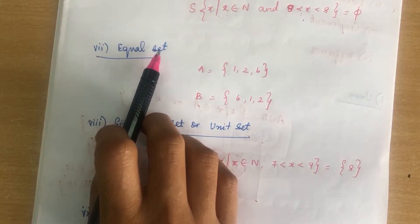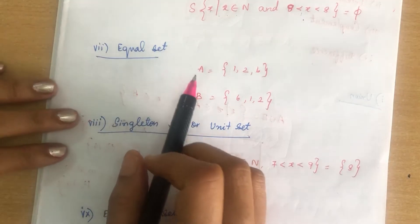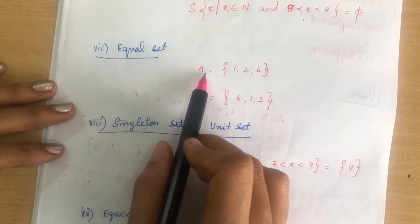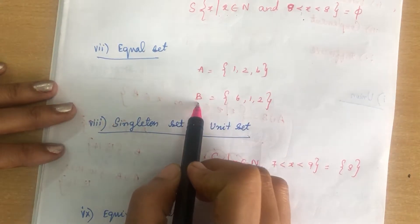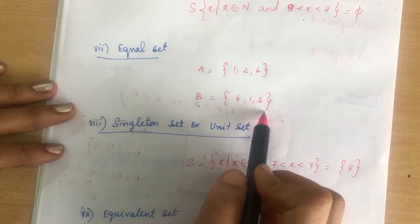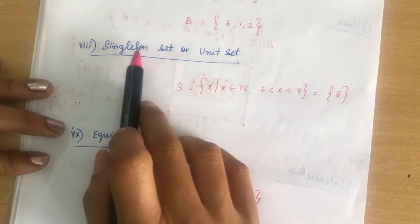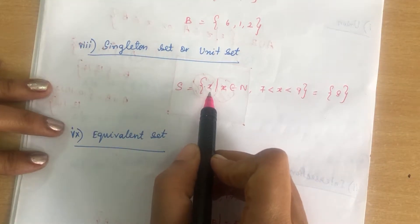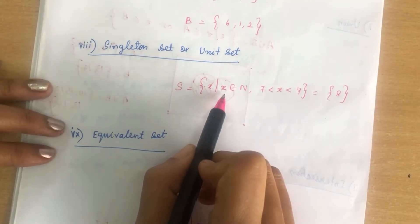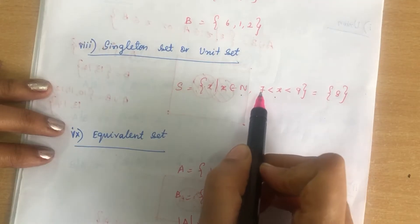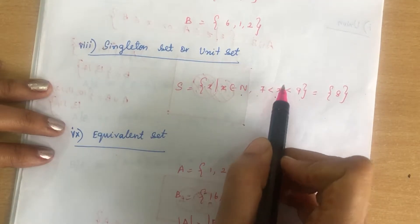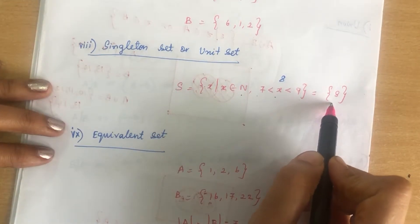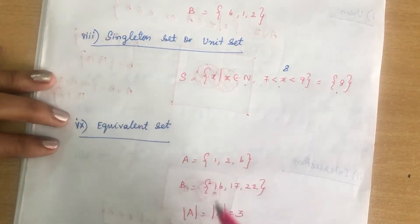Next is equal set. Equal set means if two sets contain the same elements, they are equal. For example, A = {1, 2, 6} and B = {6, 1, 2} — they are equal sets. Next is singleton set or unit set — a set that contains only one element. For example, {x | x ∈ ℕ, 7 < x < 9} — the only number between 7 and 9 is 8, so it is a singleton or unit set.